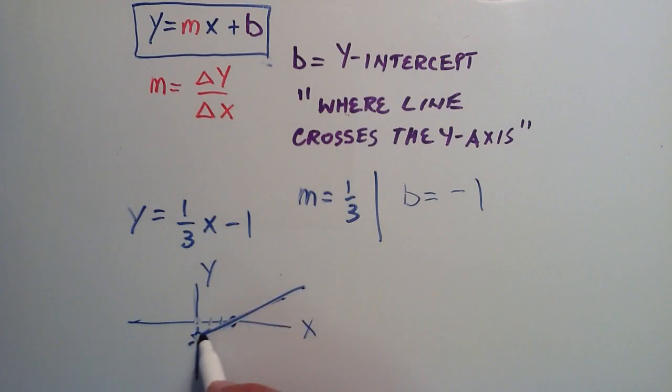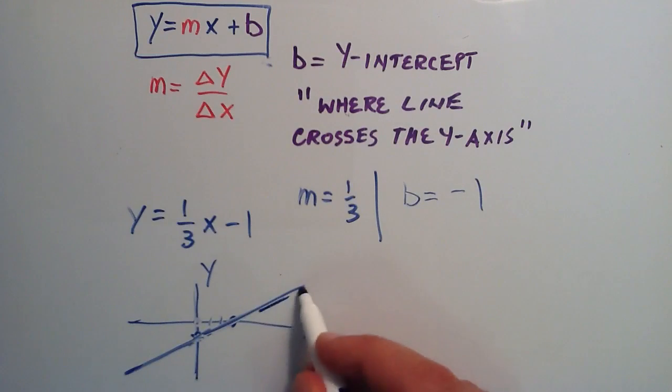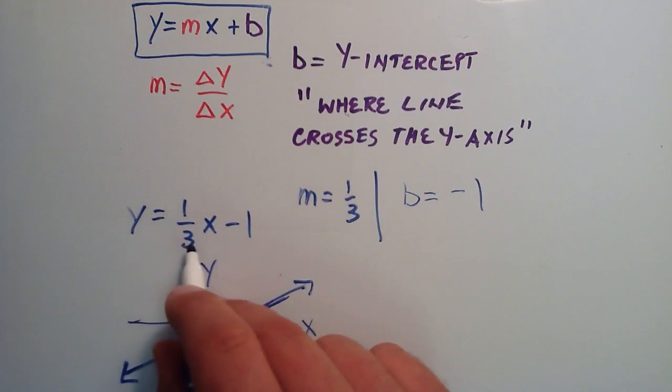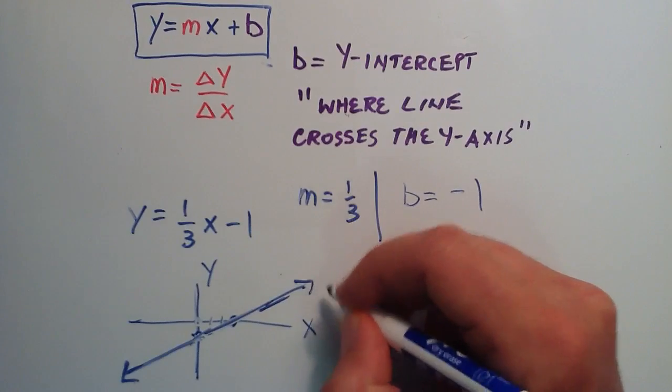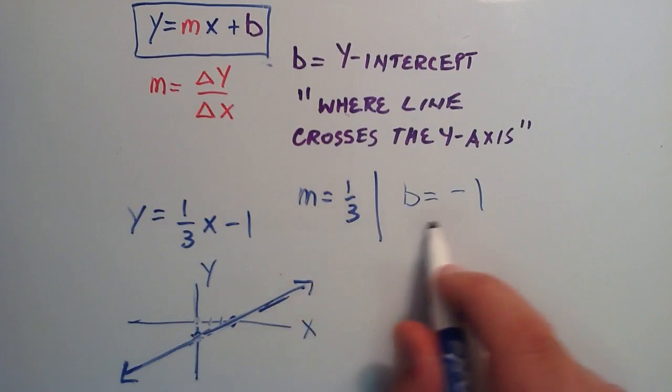And from these two points, we can simply sketch a rough description of the line y equals one-third x minus one. So that's it. That was pretty quick and easy.